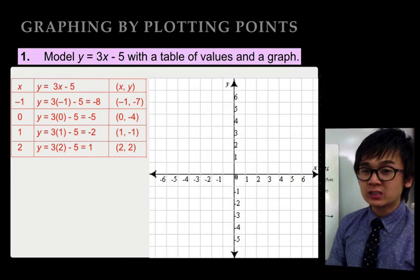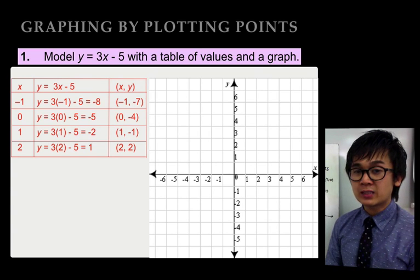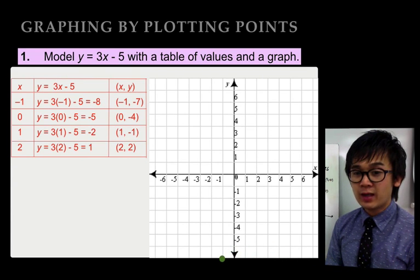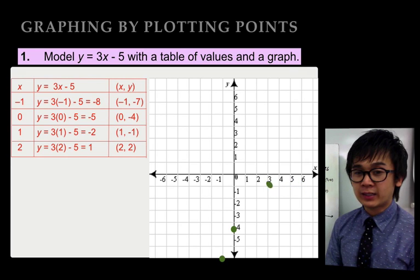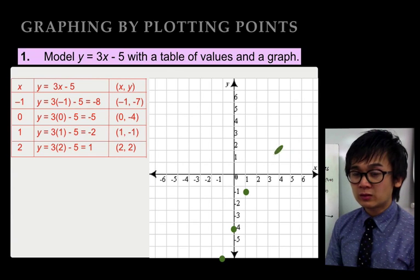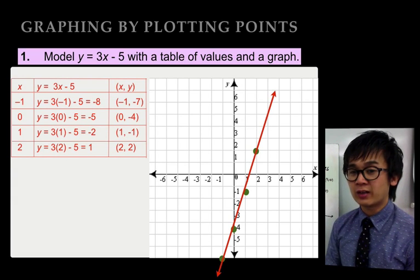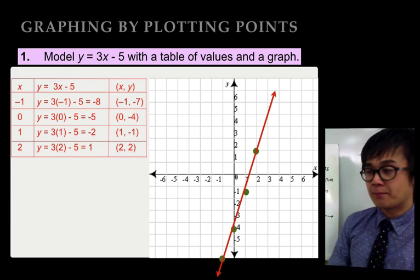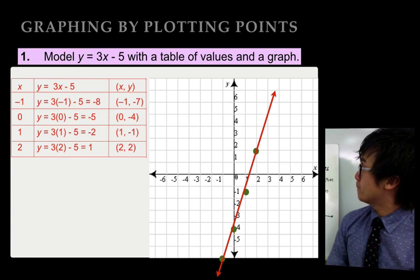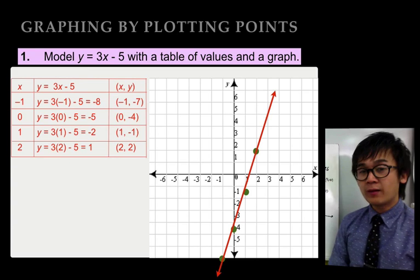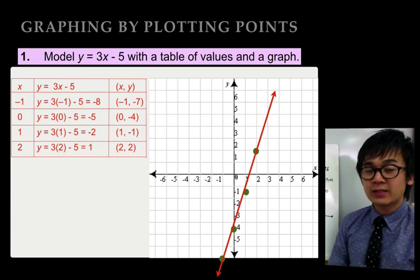Using our xy plane, by plotting the points: negative 1 and negative 7 will be in our third quadrant, 0 and negative 4, 1 and negative 1, and positive 2 and positive 2 in the first quadrant. Our points show a straight line. If we connect the dots, y equal to 3x minus 5 is represented by a straight line. That is how we use the modeling technique in finding the graph of our equation.